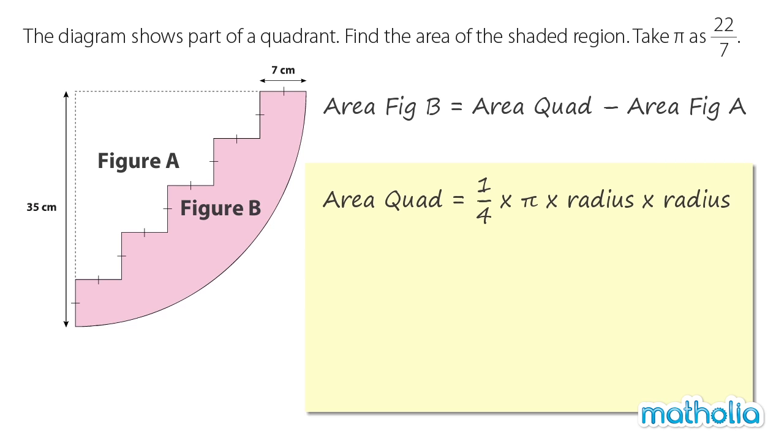Taking pi as 22 over 7 and the radius as 35 cm, we get the area of the quadrant to be 1 quarter times 22 over 7 times 35 times 35. 1 quarter times 22 over 7 equals 22 over 28, and 35 times 35 equals 1225, which gives 962.5. As we are finding area, we must remember to write the correct units. The area of the quadrant is equal to 962.5 square cm.